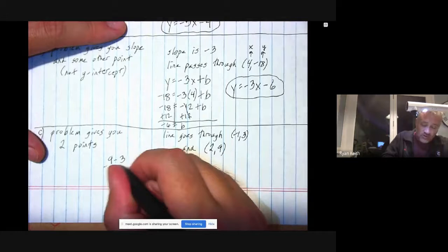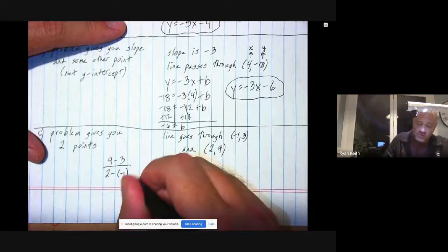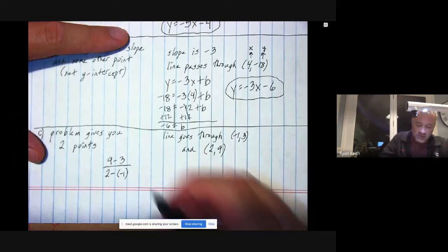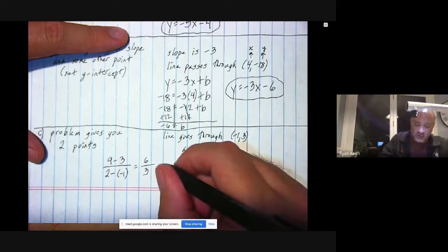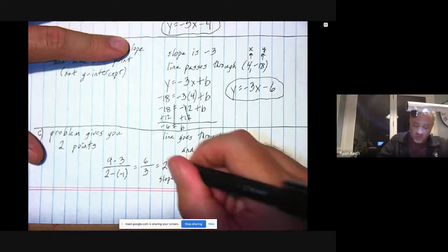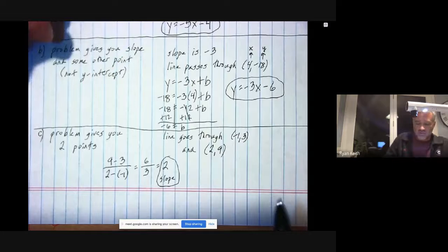It is the y values subtracted from each other - 9 minus 3, I'm going to do it in that order - and then over the x values subtracted in the same order. So since I went 9 minus 3, now I must do 2 minus negative 1. 9 minus 3 is 6, remember minus and negative is just a plus, so this is 2 plus 1 or 3, and 6 divided by 3 is 2.